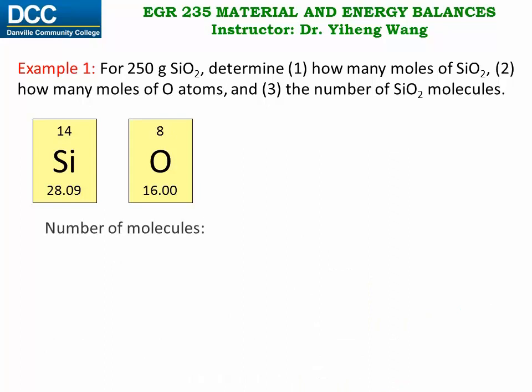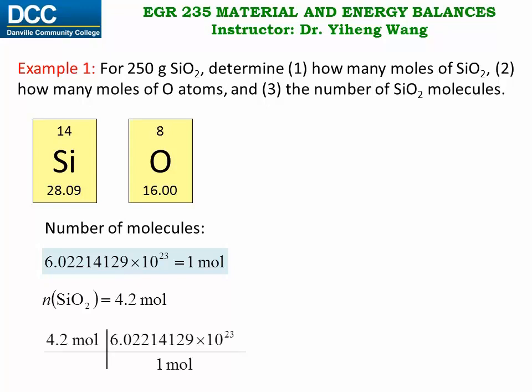To determine the number of molecules in 250 grams of silicon dioxide, we need to use this equality that one mole equals Avogadro's number, 6.022 times 10 to the 23rd power individuals. Therefore, we know that there are 4.2 moles of silicon dioxide. We can set up our unit conversion equation, cancel out the mole unit, therefore we get 2.5 times 10 to the 24th power silicon dioxide molecules.